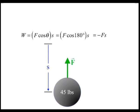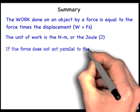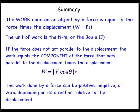In summary, the work done on an object by a force equals the force times the displacement. The unit of work is the Newton meter, which is a joule. If the force acts at an angle theta with respect to the displacement, the work is equal to the component of the force that acts in the direction of the displacement, which is F times cosine theta, times the displacement S, or W equals F cosine theta times S. Finally, the work done by a force can be positive, negative, or zero depending on the angle between the force and the displacement.